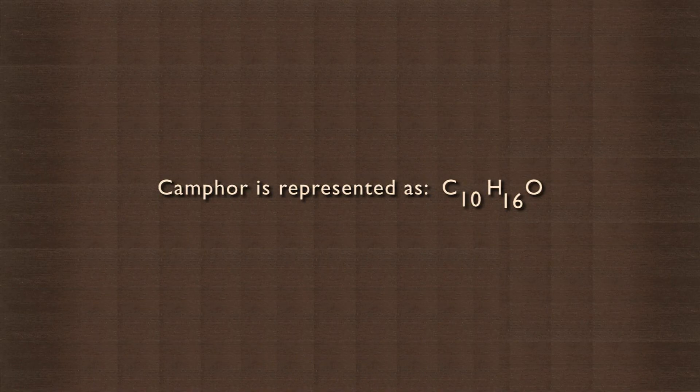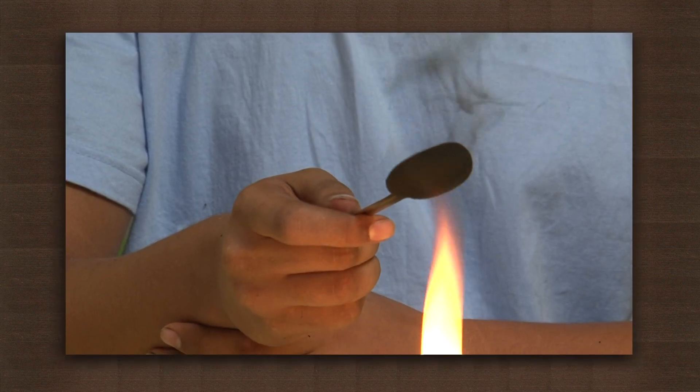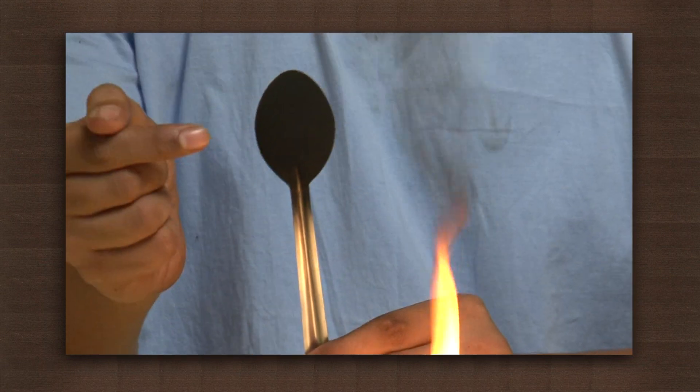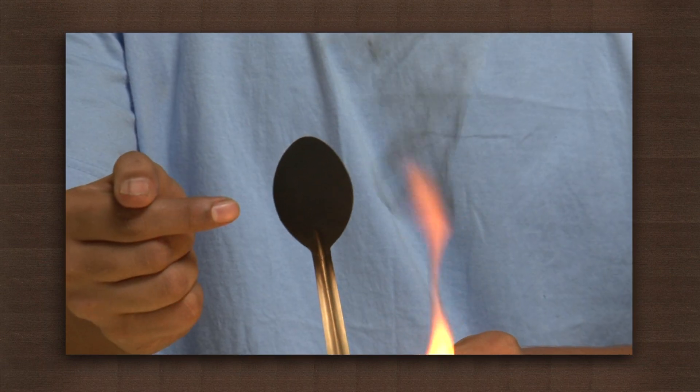Camphor is a terpenoid containing 10 carbons in its molecular formula, represented as C10H16O. As we saw, it burns with a yellow flame and produces a large amount of soot. Soot is carbon that does not react with oxygen. Since camphor has a large number of carbon atoms, not all of them get access to oxygen to form carbon dioxide — they burn in the flame generating light.